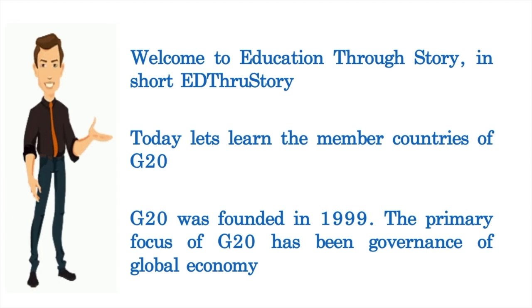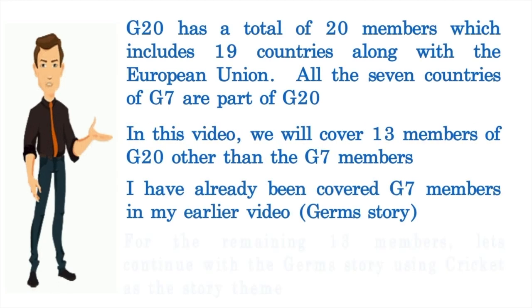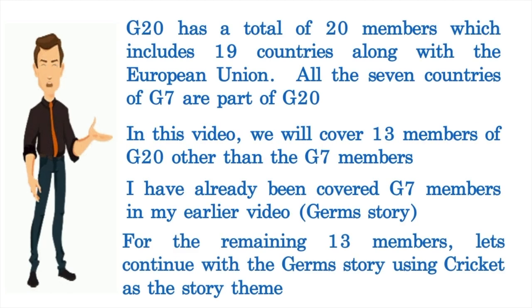G20 was founded in the year 1999 with the primary focus on the governance of global economy. G20 has a total of 20 members, which includes 19 countries along with the European Union. All 7 countries of G7 are part of G20. In this video, we will cover the 13 members of G20 other than the G7 members.